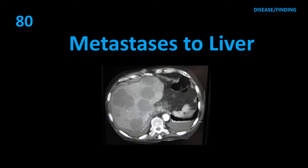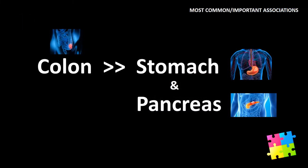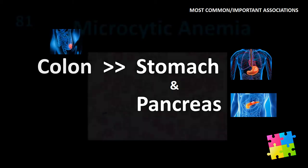Item 80: Metastases to liver — colon much more often than stomach and pancreas.